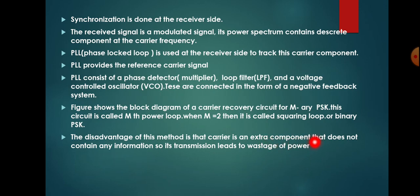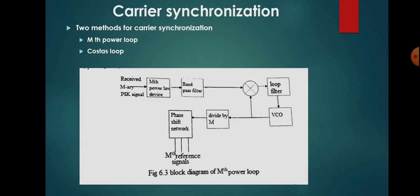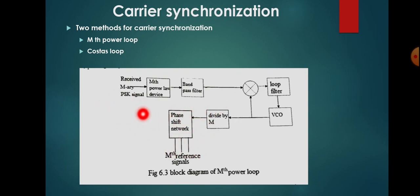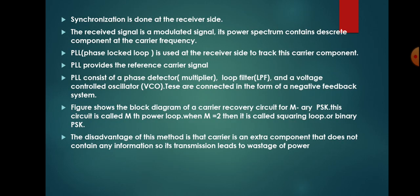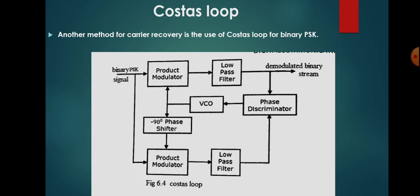The carrier is an extra component that does not contain any information, so its transmission leads to wastage of power. The transmission of the carrier signal leads to wastage of power — that is the main disadvantage in this case. In the next case, we are using another method, which is Costa's loop.